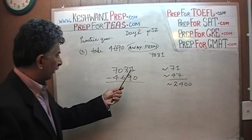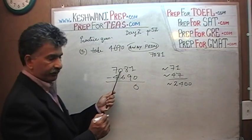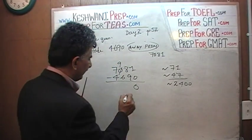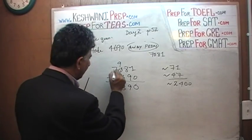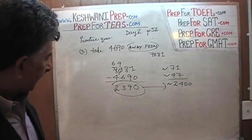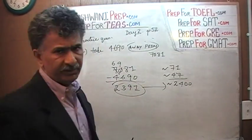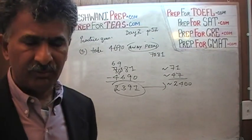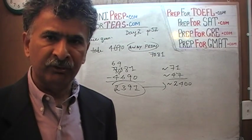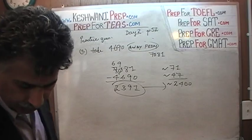Let's do it. 1 minus 0 is 1. To subtract 9 from 8 we have to borrow, but that column is 0, so we borrow from the next — it becomes 10 and 9. Then it becomes 18; 18 minus 9 is 9. And 9 minus 6 is 3. This became 6; 6 minus 4 is 2. That should have been 1; 1 minus 0 is 1. The answer is 2,391. Just keep track of your work and you'll be fine.